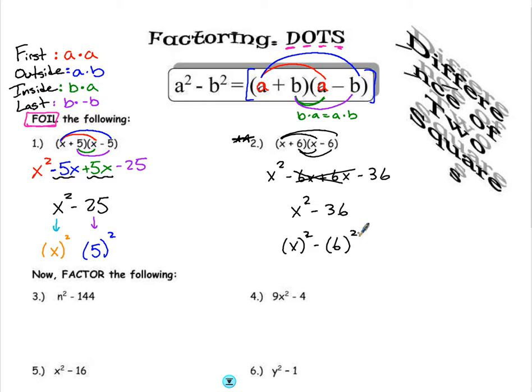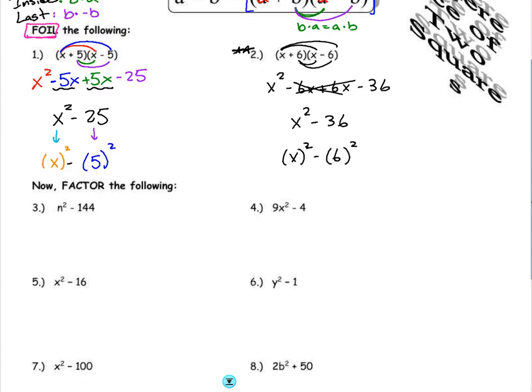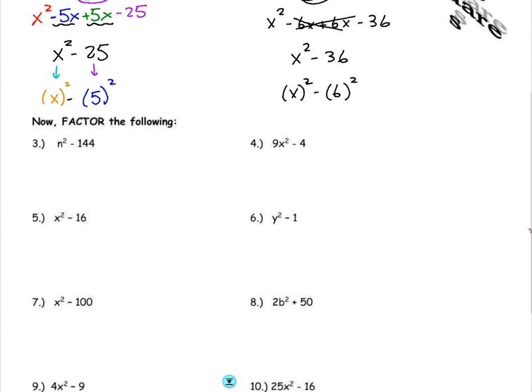Let's go ahead and look at how we're going to, rather than FOILing and going from our expanded form to our non-expanded form, we're going to reverse order. So let's look at our first example here. We're going to factor. The first thing we need to do is identify what's being squared. So here I have n squared, so n is being squared. And I need to ask myself, what times itself equals 144?